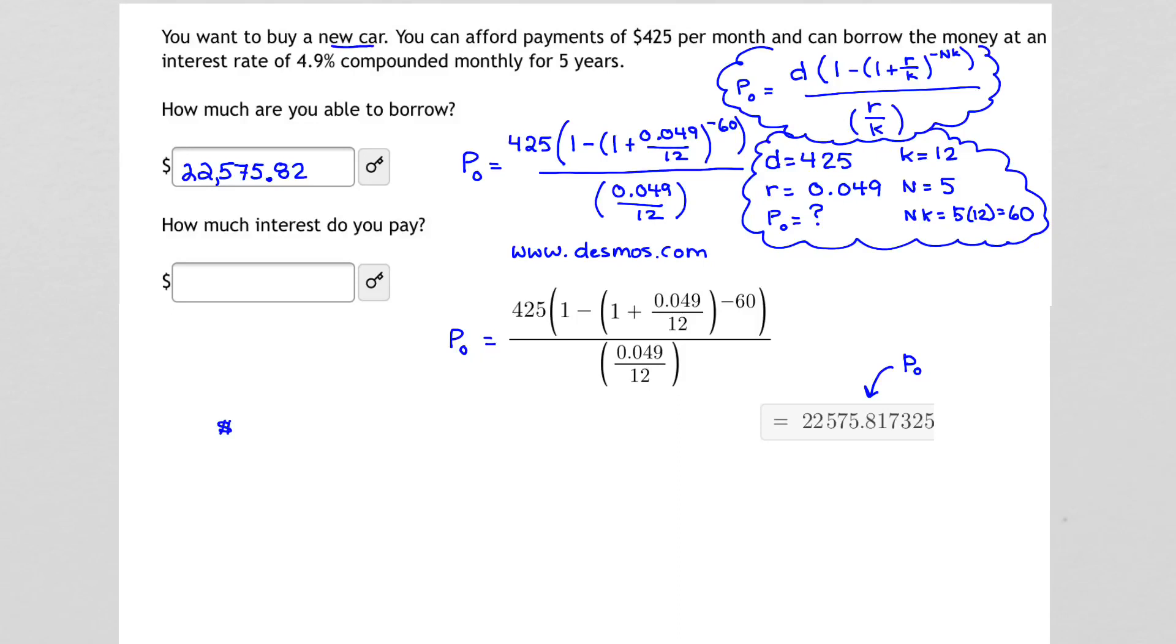So, how much payments total are going to be made? To get that, we have to take our monthly payment, which is $425. We have to multiply that times 12, and that tells us how much per year we're paying. And then we need to multiply that times 5 years, the length of the loan.